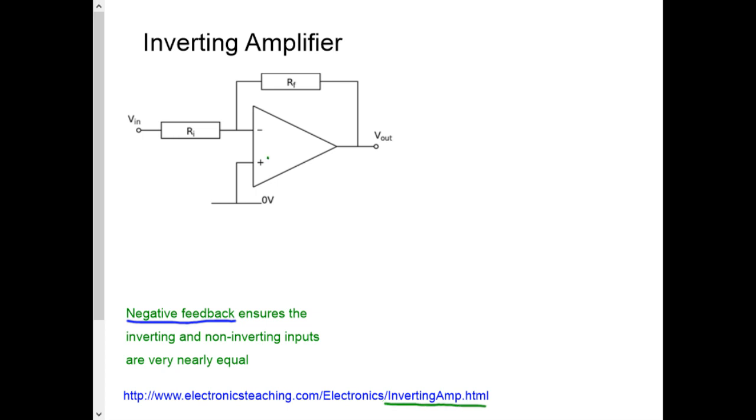Negative feedback keeps the non-inverting input and the inverting input at the same voltage. And if you'll notice, the non-inverting input is already attached directly to zero volts. So that means that the inverting input, this point here, is what we call a virtual earth, because it's effectively connected to ground, to zero volts, to earth, because the negative feedback ensures that it's always approximately zero volts.